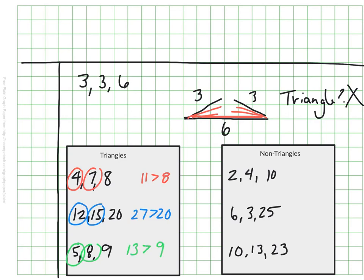On the other side, if I try the same thing, I have the two small sides are 2 and 4, which is 6. That is not bigger than 10. So that is not true. And on the second one, 6 and 3 makes 9. Is 9 bigger than 25? Well, definitely not. And on my third choice, I have 10 and 13. Now that adds up exactly to 23, but is 23 bigger than 23? It is not.